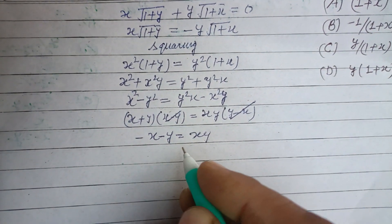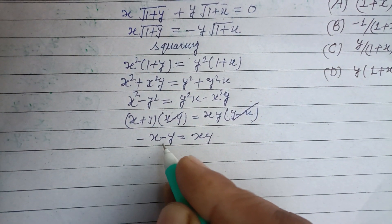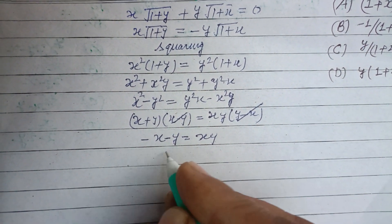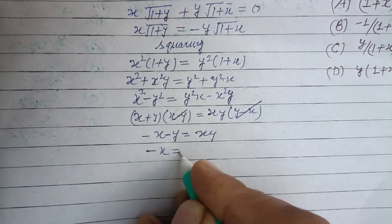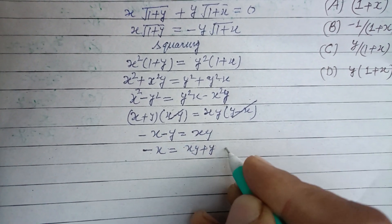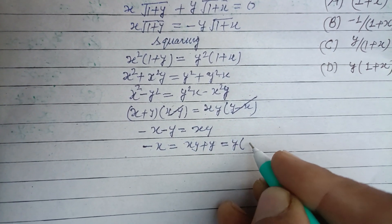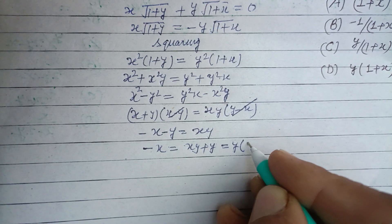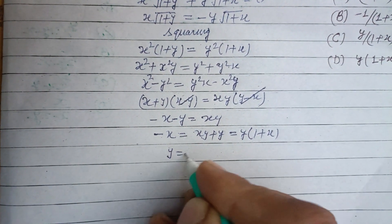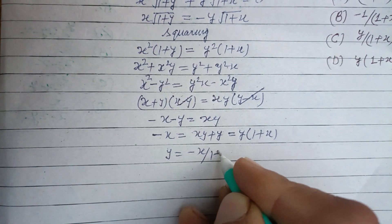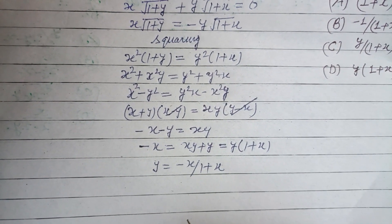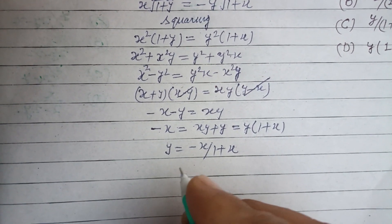Taking y to one side: xy + y = −x. Taking y common: y(1+x) = −x. Therefore y = −x/(1+x). Now differentiating this.